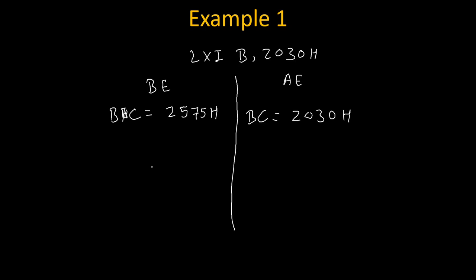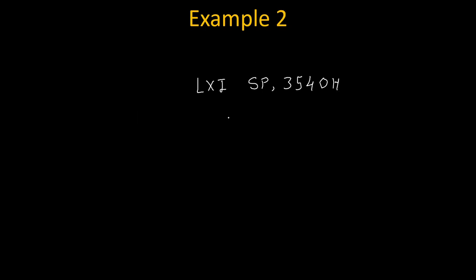Let's take one more example: suppose the instruction is LXI SP, 3540H. Before execution, let's say the stack pointer was holding 2050H. After execution of this instruction, the new value of the stack pointer will simply become 3540H — 3540H gets transferred into the stack pointer.